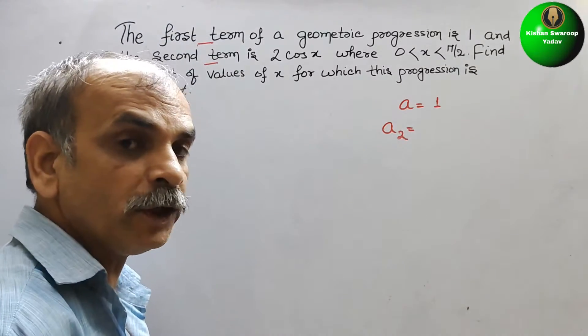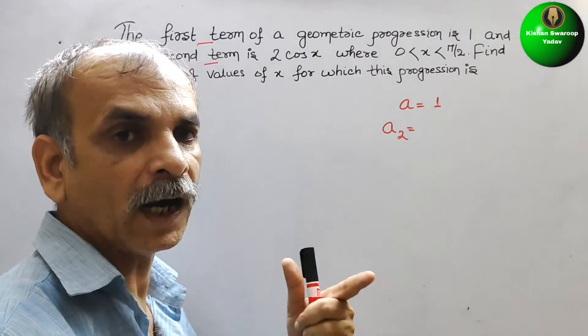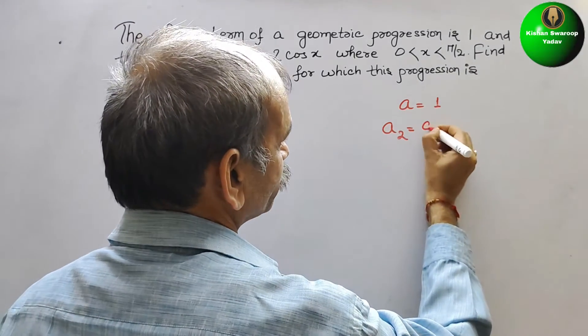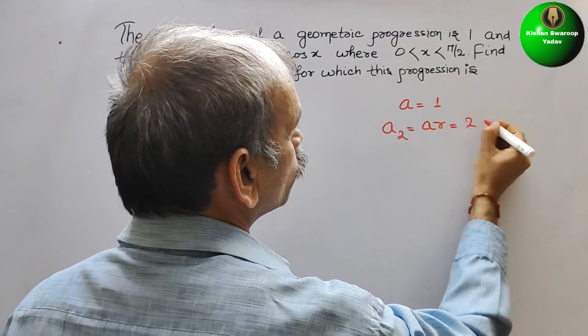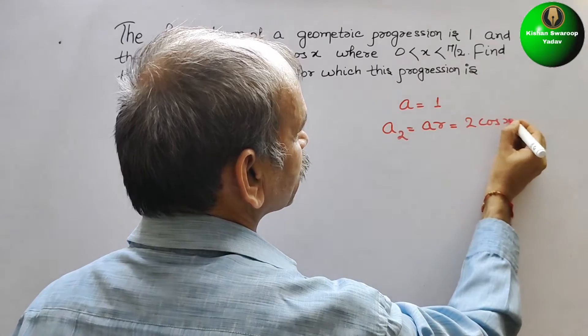A₂, how we used to write, ar. That is equal to 2 cos x.